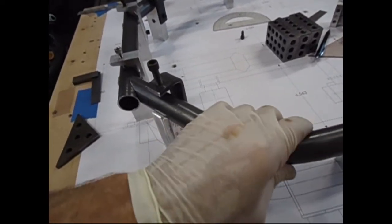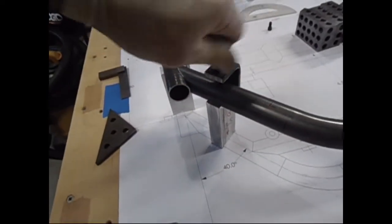Once I got my tubes bent and notched, I put them in the jig and tightened the clamping screws.